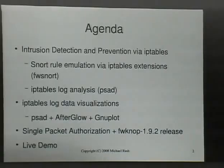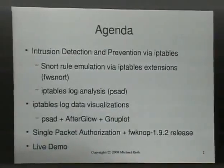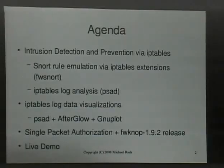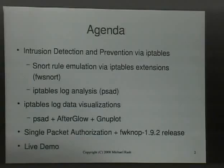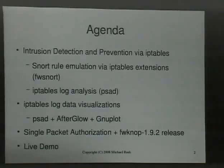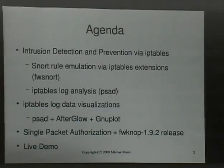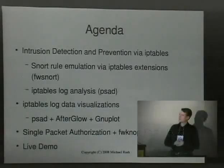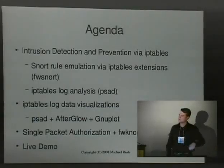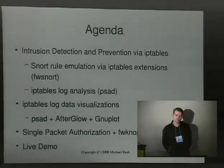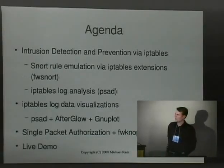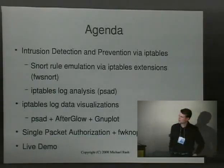What I intend to cover briefly is my vision for Linux firewalling and how it can be a lot more effective than most people think when it comes to actually doing attack detection and in some cases response. We'll talk about SNORT rule emulation with FWSnort, IP tables log analysis, IP tables log visualizations using Afterglow and GNUplot, and we'll wrap up with single packet authorization and a new release of FWKnop 1.9.2, which I'm releasing here at Source Boston. We'll wrap up with a live demo of that, assuming everything is set up here correctly.